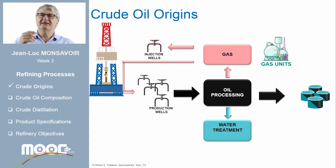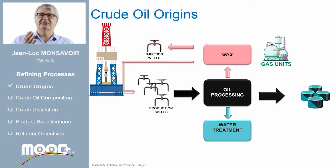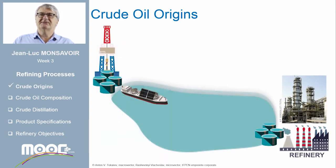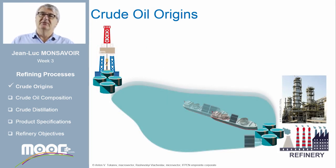As already seen this week with Isabelle, the oil is produced from the production wells. It is divided into three different flows in a separation drum: the gas, the water, and the liquid oil. In this part, we'll study how the crude oil is transformed into different products in a refinery.